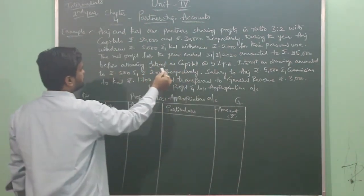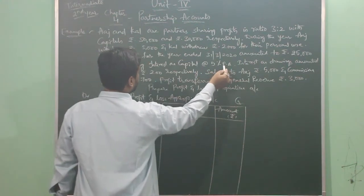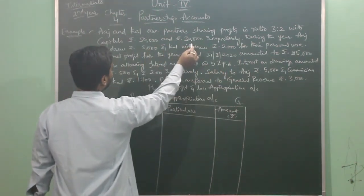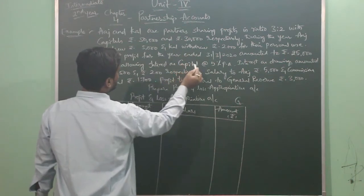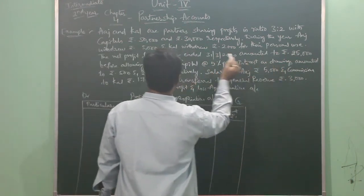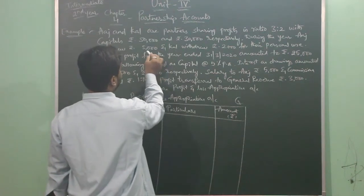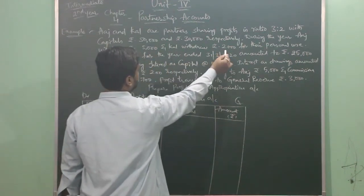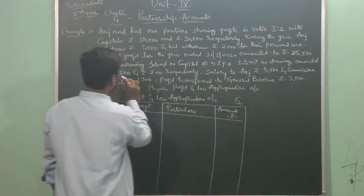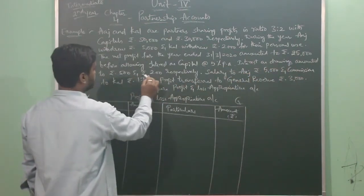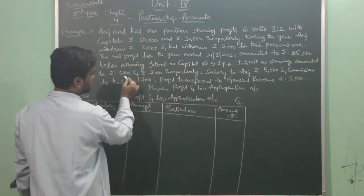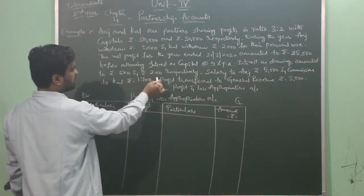Before allowing interest on capital at the rate of 5% per annum — so the capital investments of 50,000 and 30,000 will earn interest on capital at 5% per annum. Interest on drawings: Aaj is withdrawing 5,000 and Kull is withdrawing 2,000, so they have to pay interest on drawings amounting to rupees 500 and 200 respectively. No calculation is needed here; the direct amounts are given, so interest on drawings will be taken as 500 and 200.